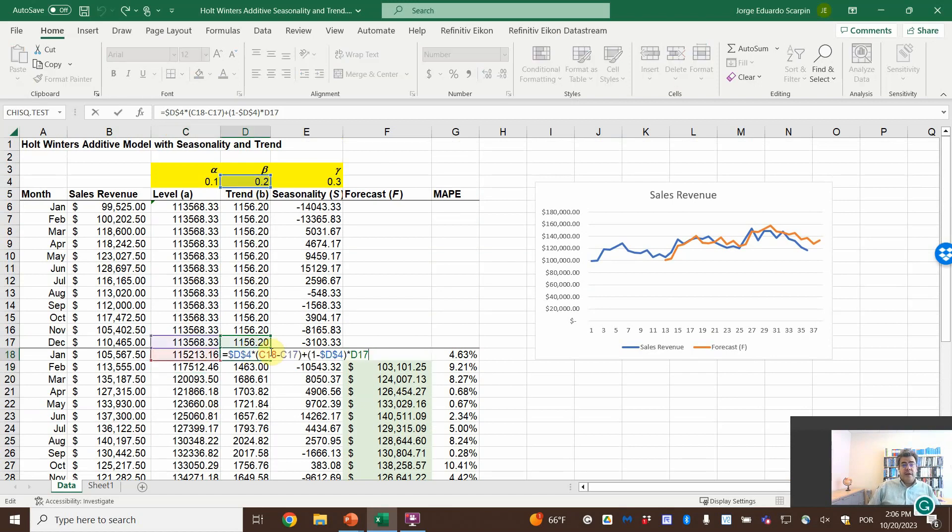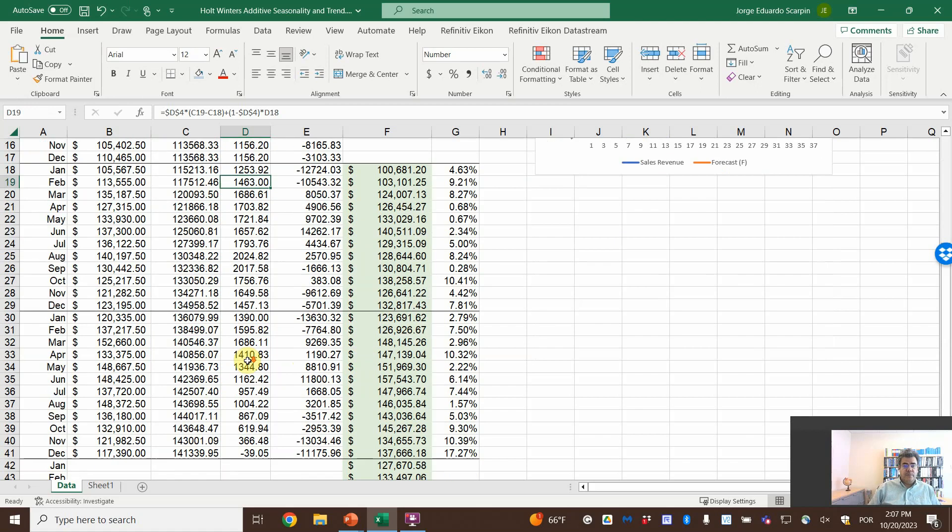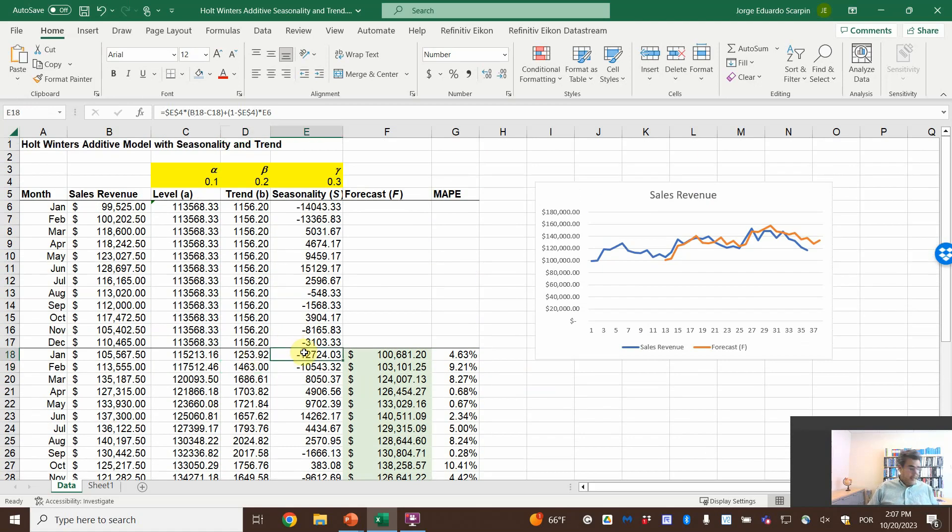For the trend, beta times the level, so the actual level, minus the previous level, plus 1 minus beta, times the previous trend. And then, later seasonality, epsilon times actual number, minus seasonality, plus 1 minus epsilon, times the previous seasonality. If you go to the model without trend, the level and seasonality formulas are the same. We are only adding the trend component. And then, okay, and then the forecast.